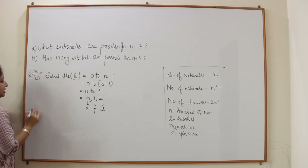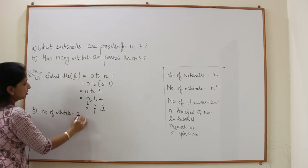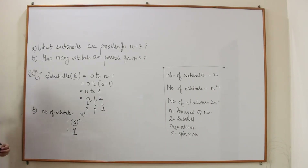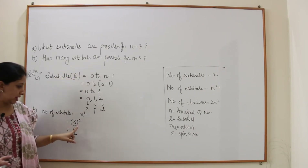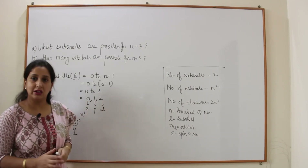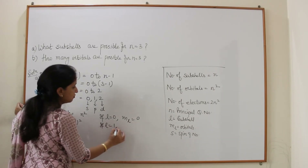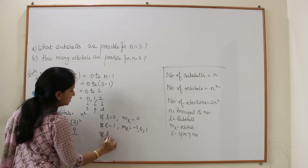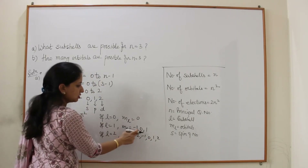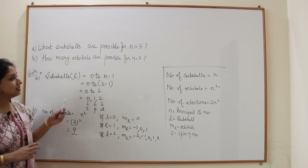The answer is: sub-shells are S, P, and D. For orbitals, we verify: L=0 gives ML=0 (1 orbital); L=1 gives ML = −1, 0, +1 (3 orbitals); L=2 gives ML = −2, −1, 0, +1, +2 (5 orbitals). Total: 1+3+5 = 9 orbitals, confirming n² = 9.